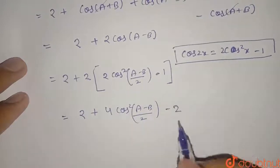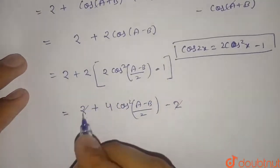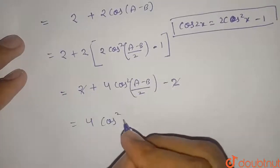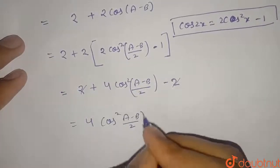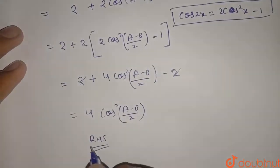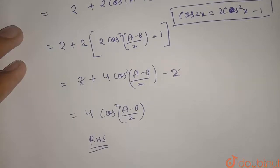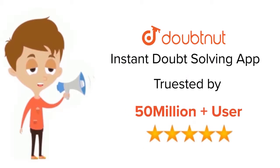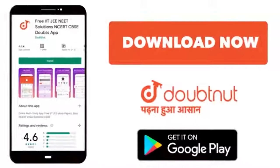So this 2 and this 2 will be cancelled out, and finally we are getting 4 cos²((A-B)/2). This is our right hand side, so hence proved. Thank you. For class 6 to 12, IIT, and NEET level, trusted by more than 5 crore students, download Doubtnut app today.